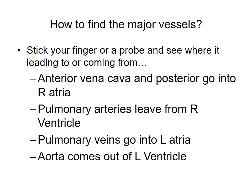When dissecting your heart, one of the easiest ways to identify which major vessel you're looking at is to take your finger or probe into the opening to see where it's coming from. The anterior vena cava and posterior vena cava both go into the right atrium. The pulmonary arteries leave from the right ventricle. The pulmonary veins enter through the left atrium, and the aorta comes out of the left ventricle.